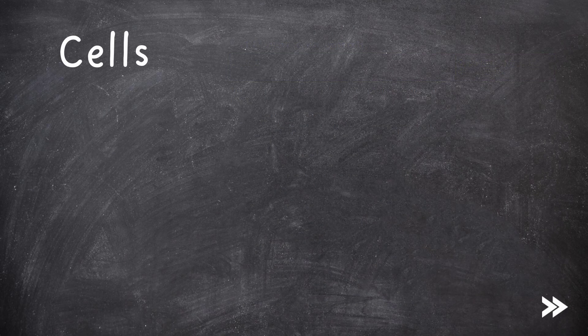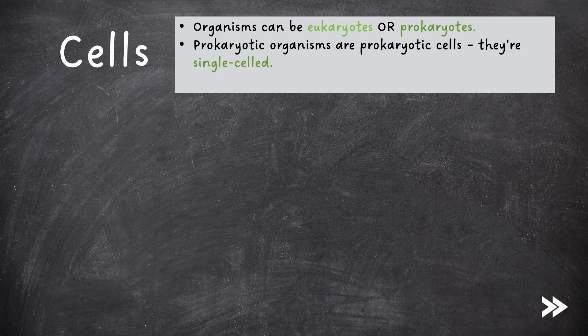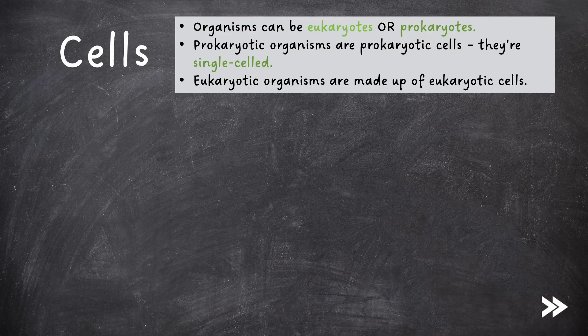Just to provide a short introduction about cells: organisms can be eukaryotes or prokaryotes. Prokaryotic organisms are prokaryotic cells, i.e. they're single-celled. Eukaryotic organisms are made up of eukaryotic cells. So let's compare the structure of plant and animal cells.